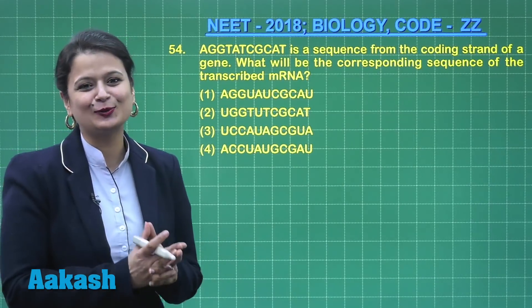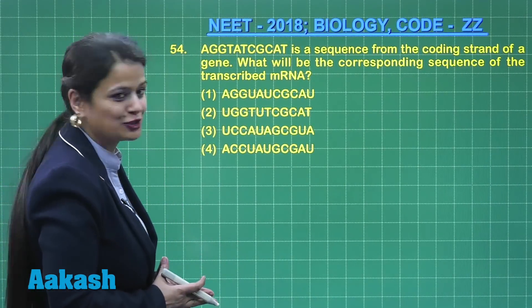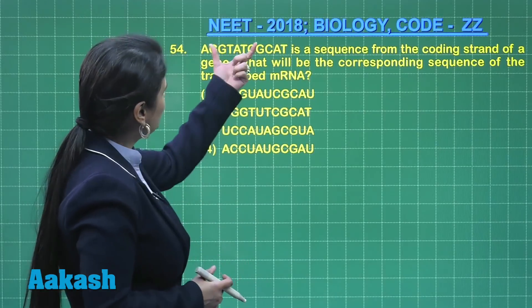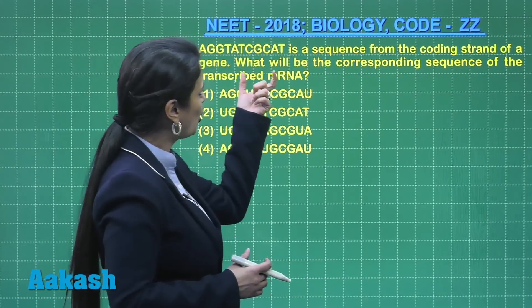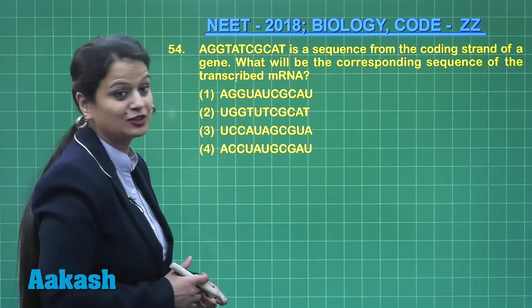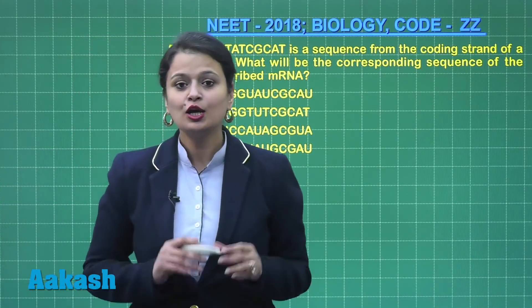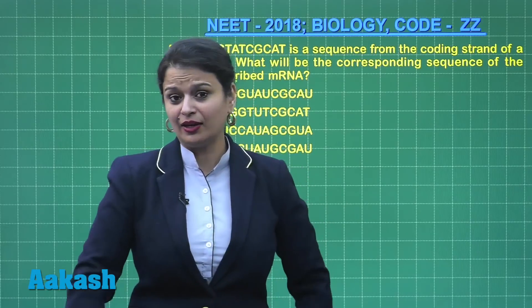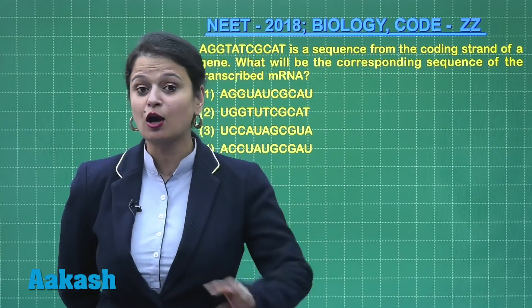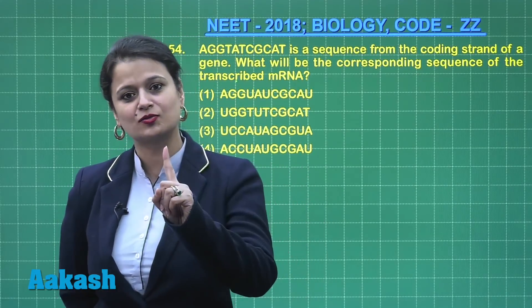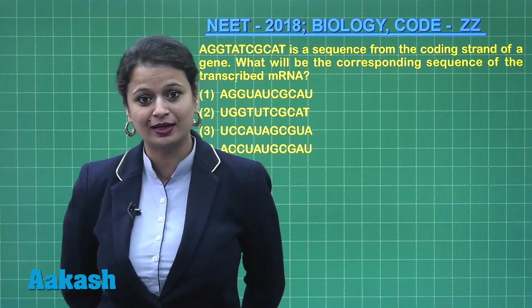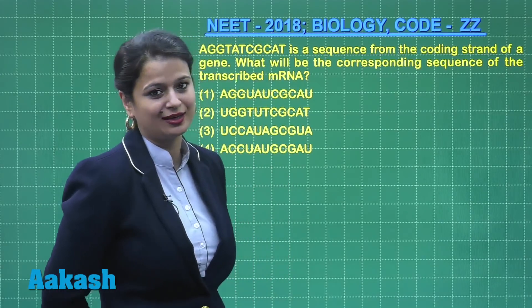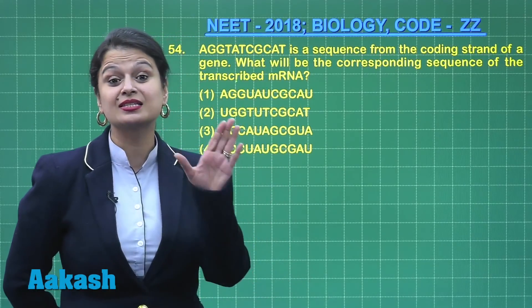This question is related to molecular basis of inheritance — a question on genetics. Given the sequence for the coding strand of a gene, what will be the corresponding sequence of the transcribed messenger RNA? In DNA there are two strands, but only one strand carries information for the synthesis of messenger RNA.